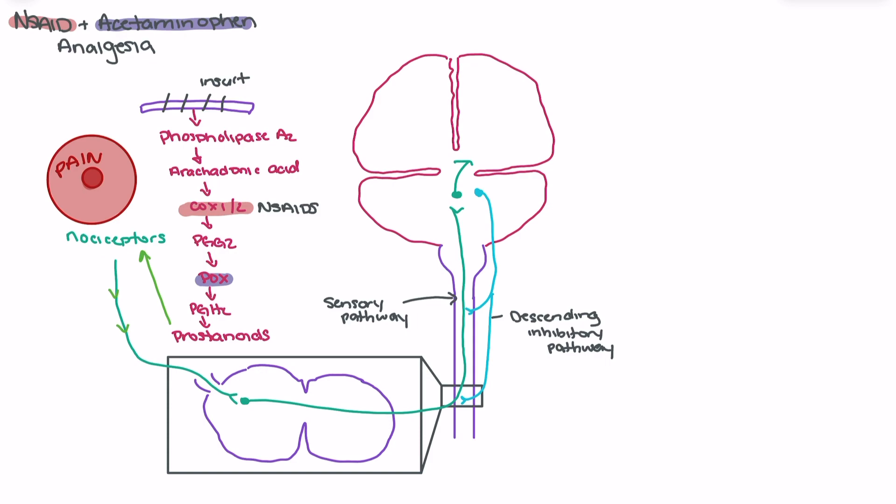What's interesting about NSAIDs is NSAIDs typically will also activate the descending inhibitory pathway. This is not a well-known mechanism, but we start to see activation of the descending inhibitory pathway, which also limits the pain response.